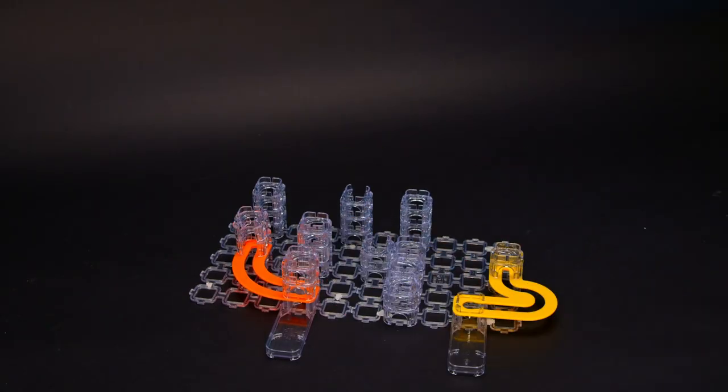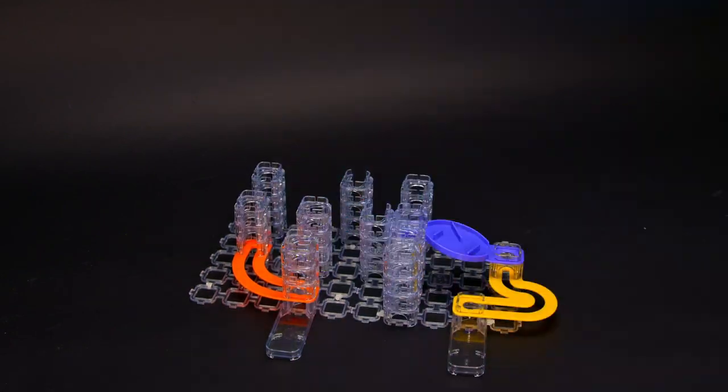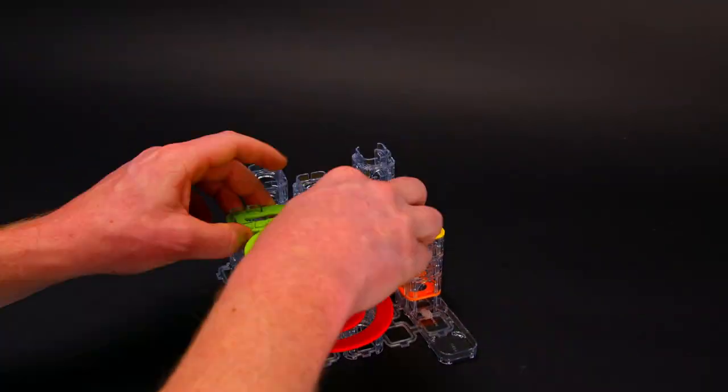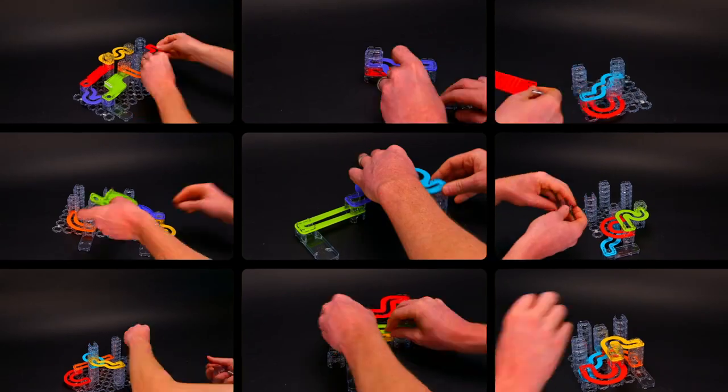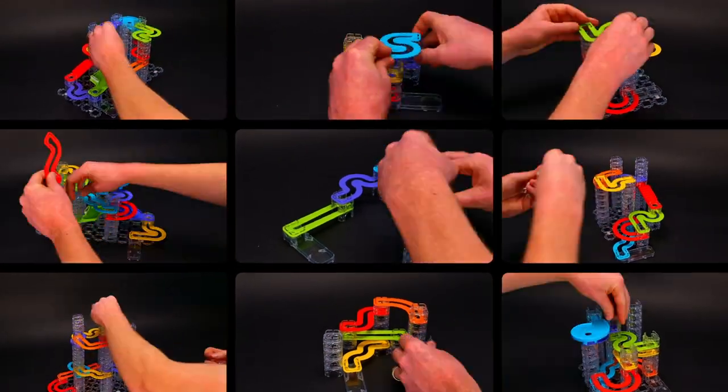What I think is really cool about Trestle Tracks is the fact that you're not really locked into any one configuration. A lot of marble runs traditionally have very few setups that you can actually make. With the grid that Trestle Tracks is set up on, your possibilities are almost endless for how many different configurations and arrangements you can make.